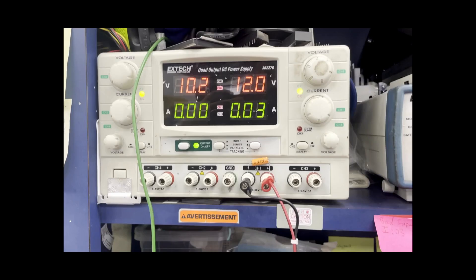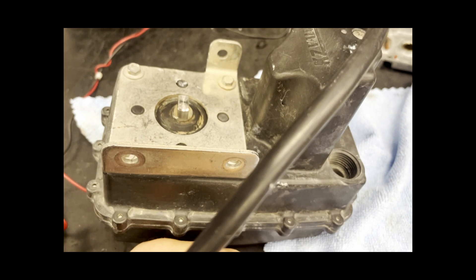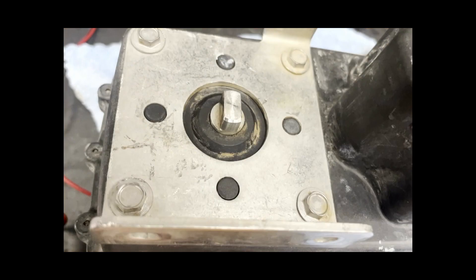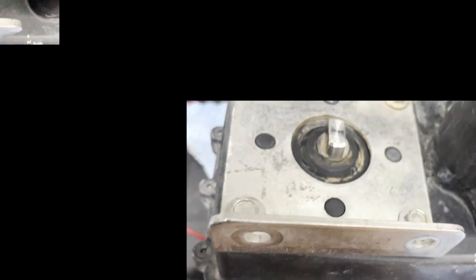Here we have our 12 volts for our bench test of the newly rebuilt actuator. You can see the shaft position here. It should change when our 12 volts is applied to 90 degree position. So we will go ahead and do that now.